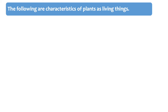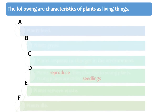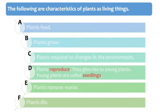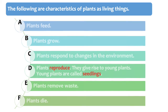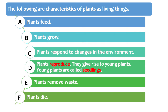The following are characteristics of plants as living things. A. Plants feed. B. Plants grow. C. Plants respond to changes in the environment. D. Plants reproduce — they give rise to young plants. Young plants are called seedlings. E. Plants remove waste.